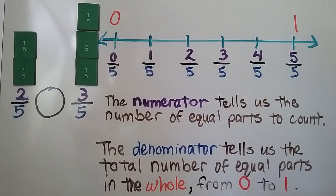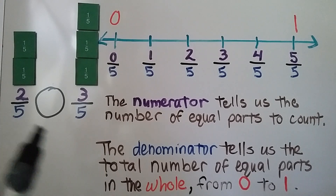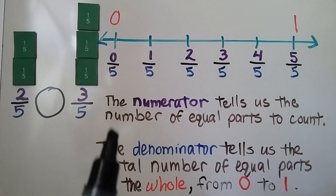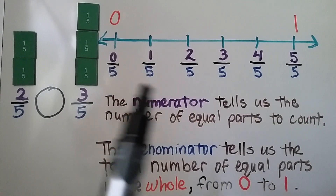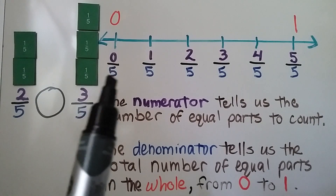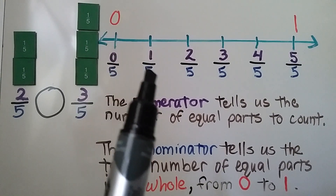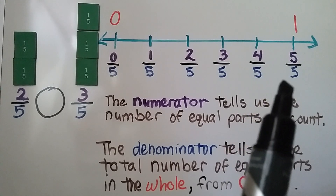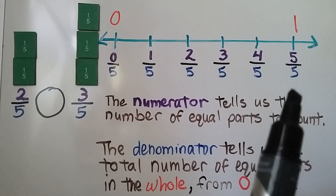Here we want to compare 2 fifths and 3 fifths. They have the same denominator — they both have 5 for a denominator. On our number line, it's split up into fifths: 0 fifths, 1 fifth, 2 fifths, 3 fifths, 4 fifths, and 5 fifths, where the numerator and denominator are the same.